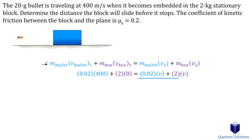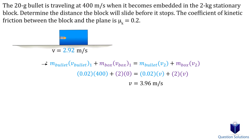On the other side, we have the mass of the bullet and the mass of the block multiplied by the final velocity. Solving gives us 3.96 meters per second, which means that once the bullet is embedded, both the bullet and the block travel with that velocity.